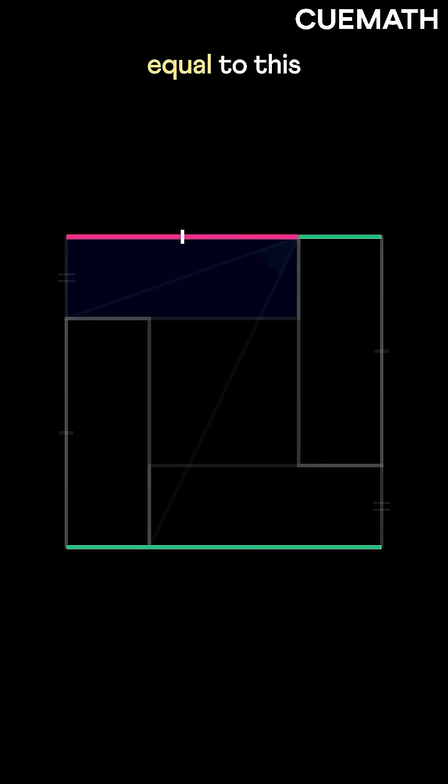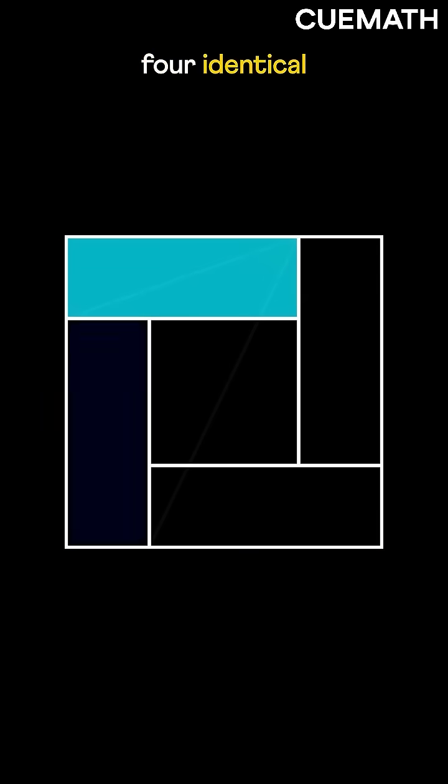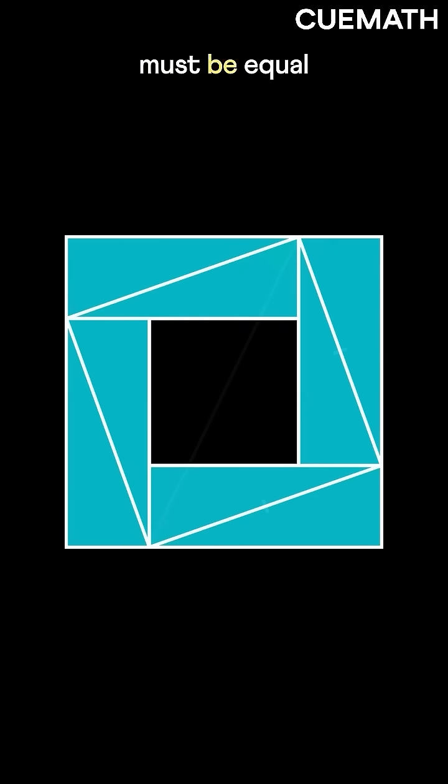Similarly, its longer side must be equal to this side. So we have four identical rectangles. If we draw their diagonals, they must be equal as well.